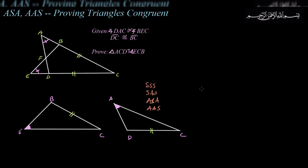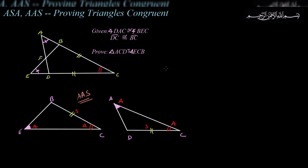We need one more piece of information. What do we have? An angle, a side, and now angle C is common to both triangles by the reflexive property. So we have angle, angle, and side. Does angle-angle-side work? That doesn't spell a bad word, so yes! Angle-angle-side — alhamdulillah — we can prove these triangles congruent using angle-angle-side.